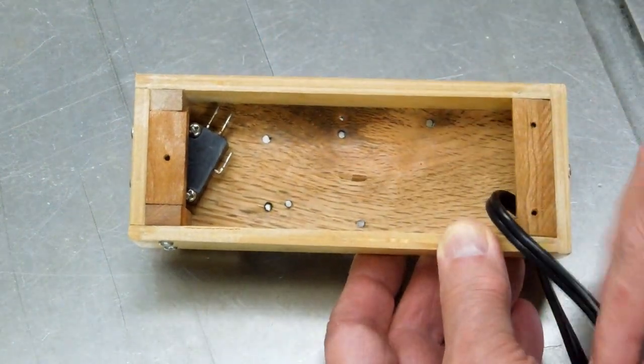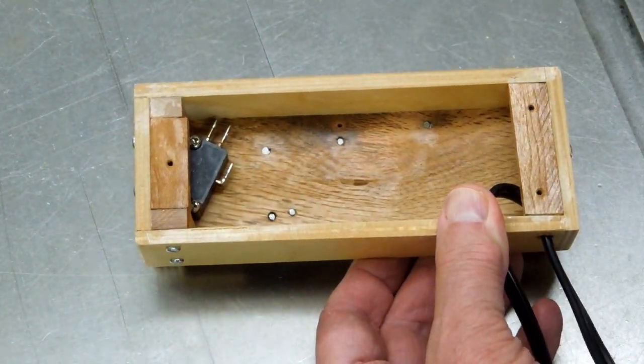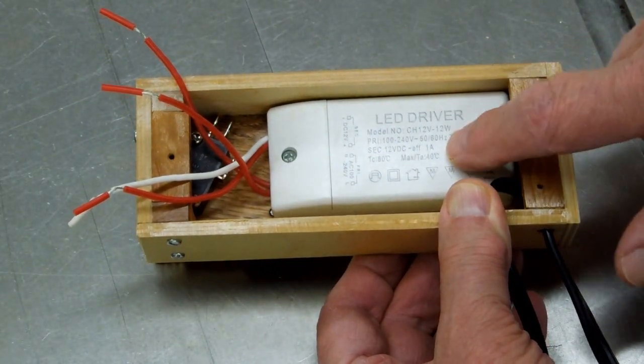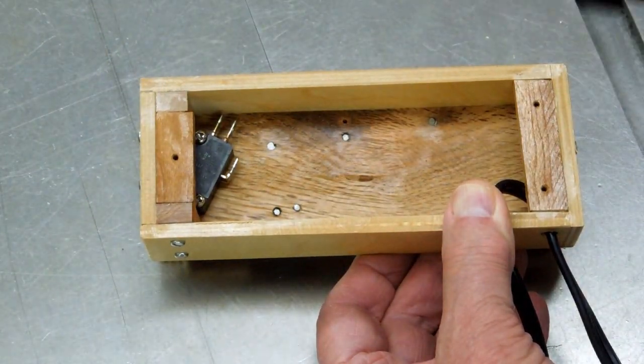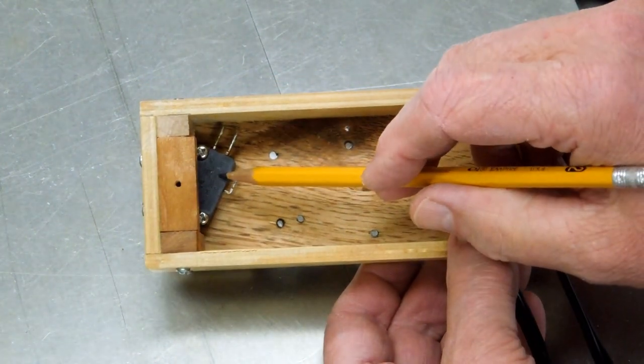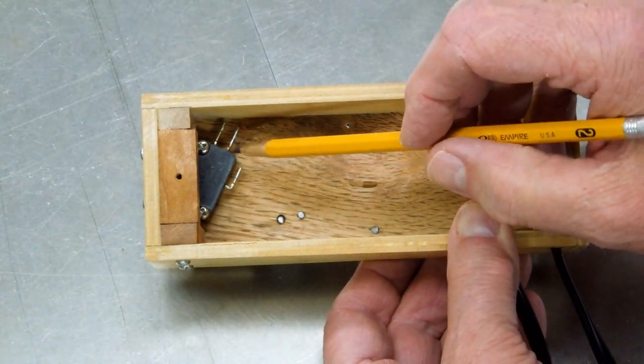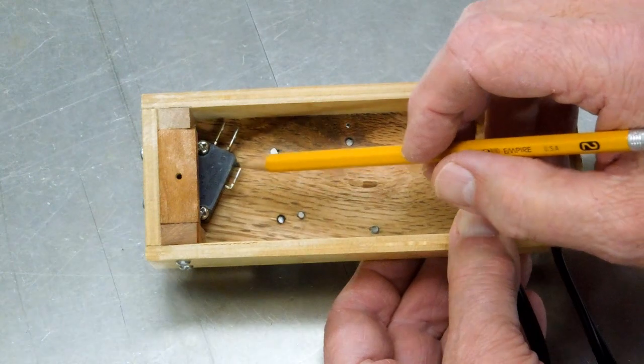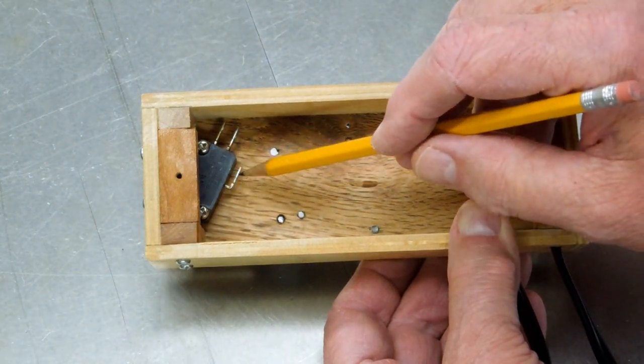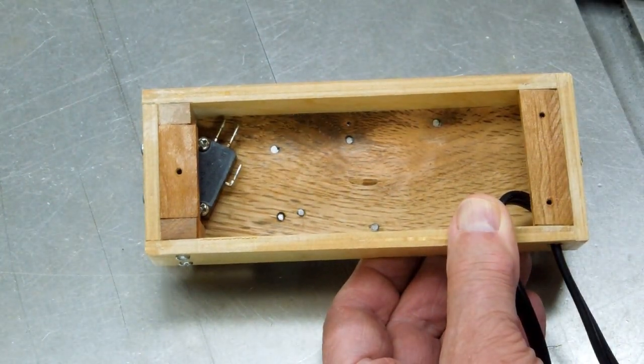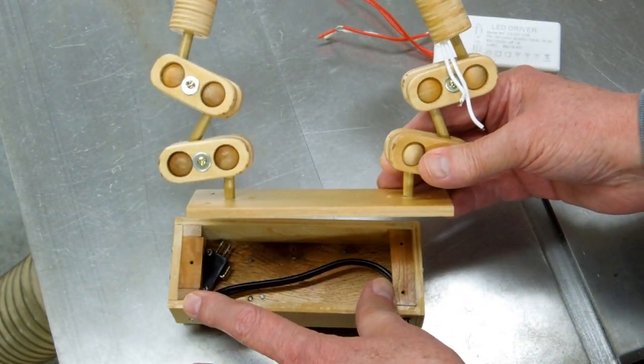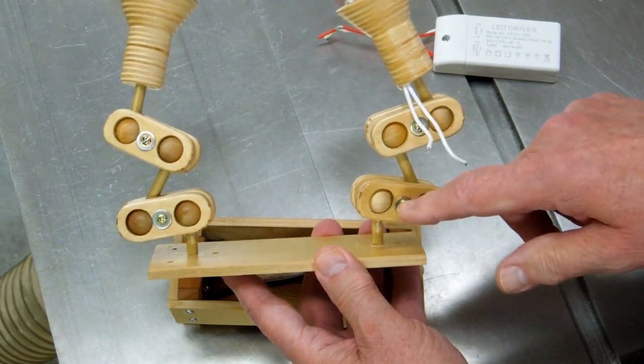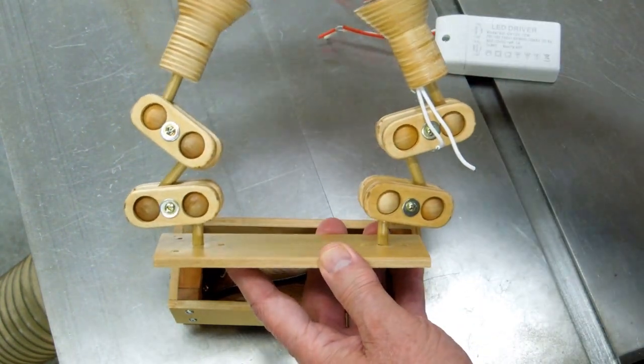Line voltage power cord is coming in from this side. The LED driver or transformer will sit in here. This little micro switch has a normally open and normally closed position and will be wired to these two points which is normally closed.